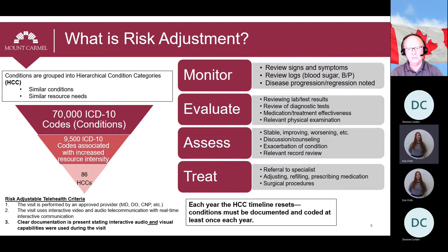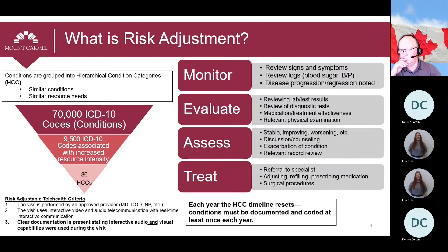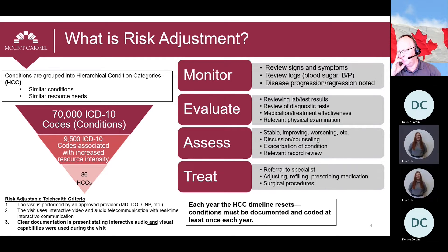There are 86 HCCs included in the 2022 risk adjustment model. For a diagnosis to be captured on the claim, it must have support in the documentation within the record. An easy way to remember documentation requirements is the acronym MEAT, which stands for Monitor, Evaluate, Assess, and Treat. Only one of these elements needs to be present for each diagnosis taken into medical decision-making.